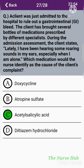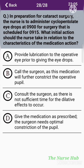The twenty-eighth question: In preparation for cataract surgery, the nurse is to administer cyclopentolate eye drops at 9 AM for surgery scheduled at 9:15 AM. What initial action should the nurse take? Option A: Provide lubrication to the operative eye prior to giving the drops. Option B: Call the surgeon, as this medication will further constrict the operative pupil. Option C: Consult the surgeon, as there is not sufficient time for the dilative effects to occur. Option D: Give the medication as prescribed — the surgeon needs optimal constriction of the pupil. The correct answer is option C: Consult the surgeon, as there is not sufficient time for the dilative effects to occur.